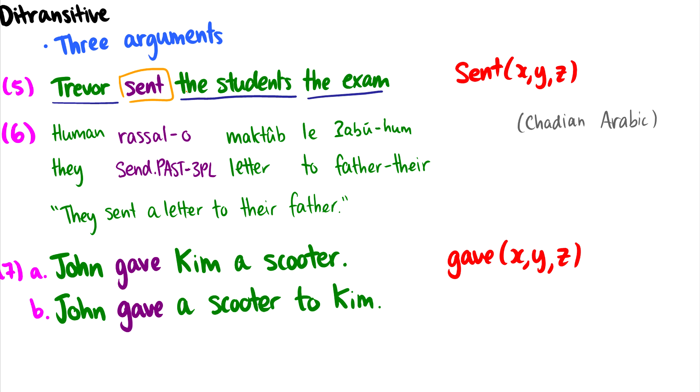7a and 7b kind of show this difference. So 'John gave Kim a scooter.' So John, Kim, and a scooter are all arguments. And in 7b, 'John gave a scooter to Kim.' In this case, 'to Kim' isn't a noun phrase argument, it is a prepositional phrase argument. But there are still three different arguments there. Someone gave something to someone. Those are three arguments.